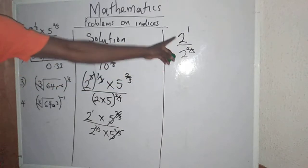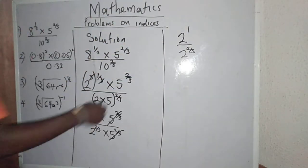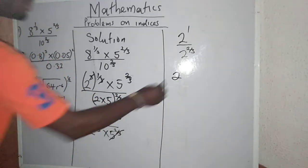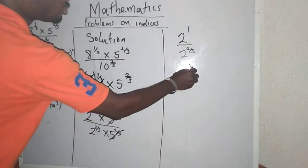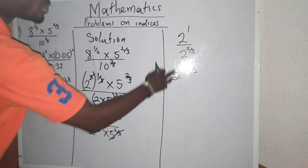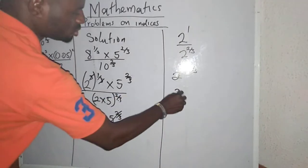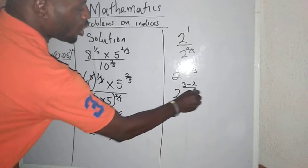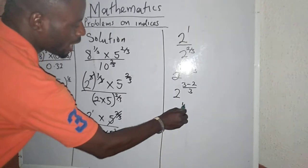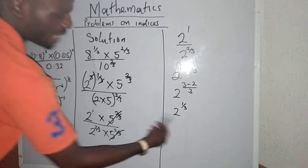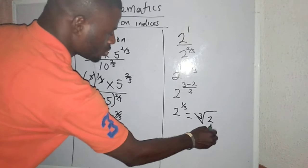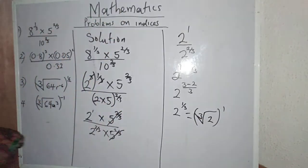Left with 2 raised to the power 1 divided by 2 raised to the power 2/3. They are of the same base. Therefore, go back to law 2, which gives us 2 raised to the power 1 minus 2/3. The common denominator is 3, so 3/3 minus 2/3 gives us 2 raised to the power 1/3. I can now write this as the cube root of 2. That is solution number 1.